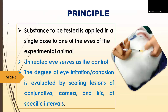The principle of the acute eye irritation test: the substance to be tested is applied in a single dose to one of the eyes of the experimental animal, and the untreated eye serves as the control. The degree of eye irritation or corrosion is evaluated by scoring lesions of the conjunctiva, cornea, and iris at specific intervals.